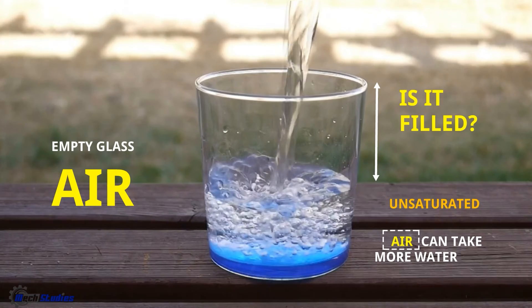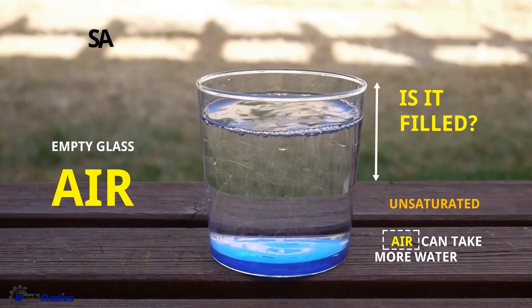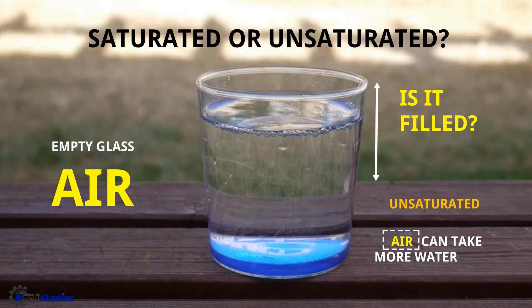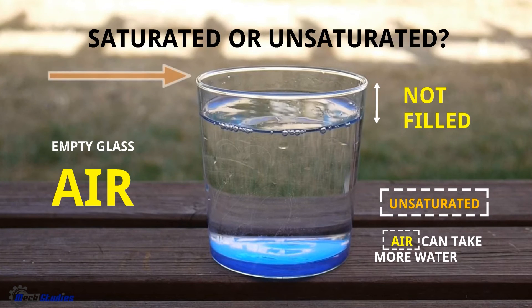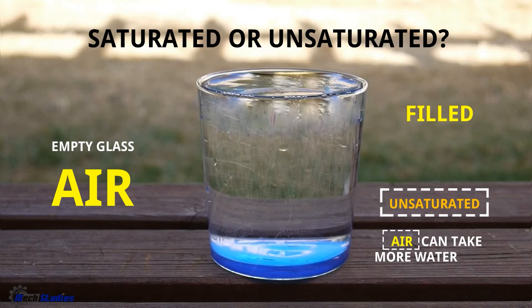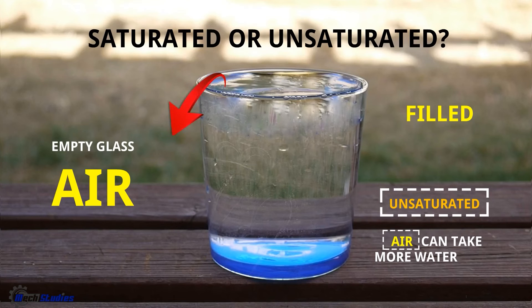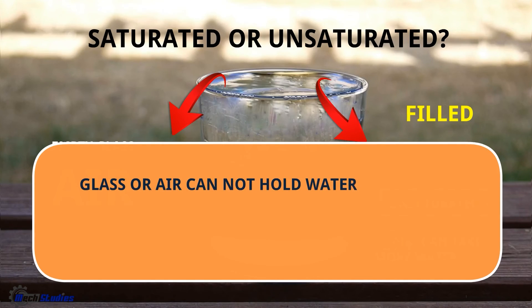Now if we add some more water — is it saturated or unsaturated? It is still not filled, so it is also unsaturated. Now if we add more water up to the top level, the glass is filled — it means the glass cannot hold more water, and this is the maximum water level the air or glass can hold. If we add more water, it will overflow.